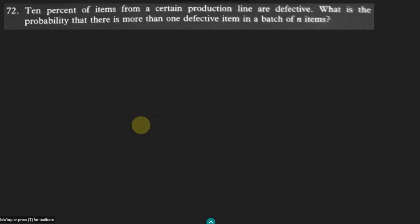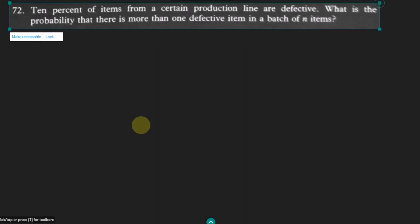Hello all, this is question number 72 in our book of Probability and Random Processes for Electrical Engineering by Libertoli and Garcia. In this question we are told that 10% of items from a certain production line are defective. What is the probability that there is more than one defective item in a batch of n items?